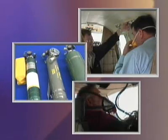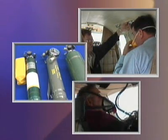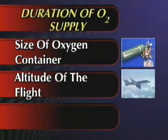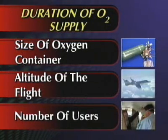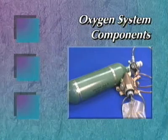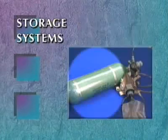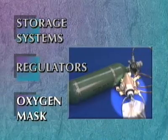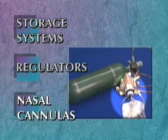Regardless of the type of oxygen system used, duration of oxygen supply depends upon several factors: the size of the oxygen container, the altitude of the flight, and the number of people using the oxygen system. There are three components on most oxygen systems, whether portable or fixed: storage systems, regulators, and oxygen masks or nasal cannulas.